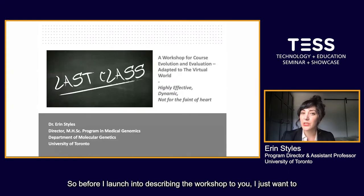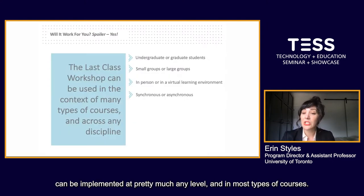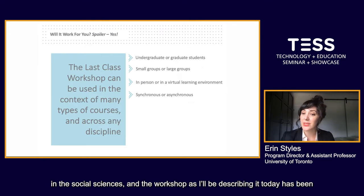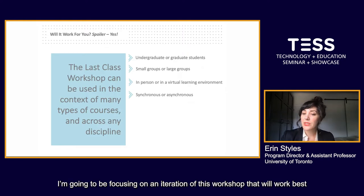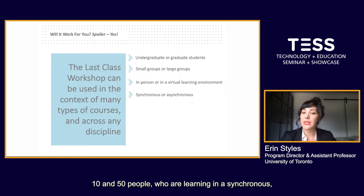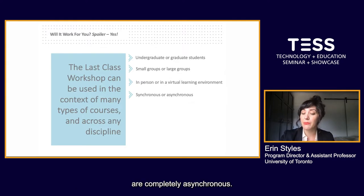Before I launch into describing the workshop, I just want to frame it a little bit. This session can be implemented at pretty much any level and in most types of courses. In its original form it was oriented towards first-year undergraduate students in the social sciences, and the workshop as I'll describe it today has been targeted to graduate students in advanced genetic classes. I'm going to focus on an iteration that works best with a relatively small group — somewhere between 10 and 50 people — learning in a synchronous virtual environment, but I'll also offer suggestions for adapting for larger groups and fully asynchronous classes.